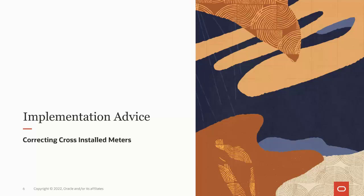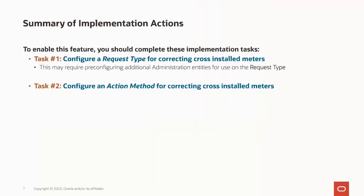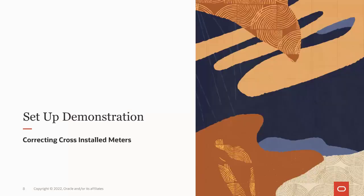In this implementation advice section, we will go through what you need to consider to enable the correcting cross-installed meters capability in your business. There are two main tasks that you should complete to enable the new capability. First, you must configure a request type for correcting cross-installed meters. This contains the business controls or configuration options that process flows use, based on the application-owned process flow type used for correcting cross-installed meters. You may also need to pre-configure some additional administration entities depending on your implementation-specific requirements. You must also configure an action method for correcting cross-installed meters.